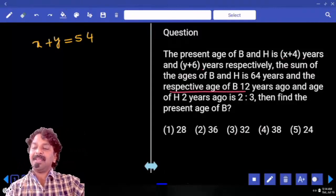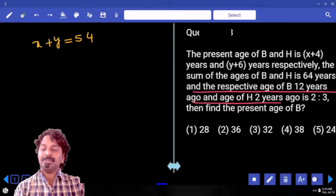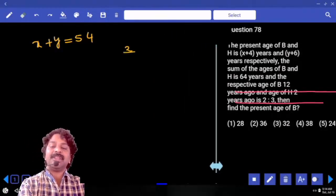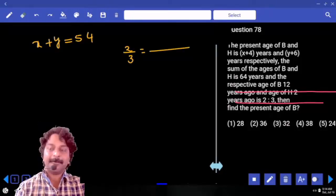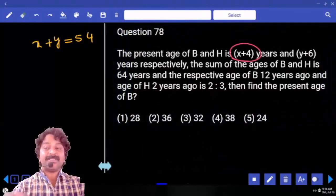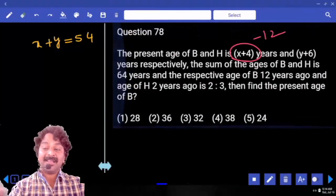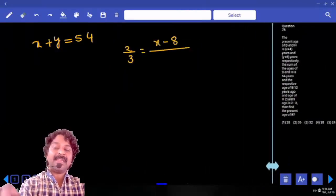The respective ages of B 12 years ago and age of H 2 years ago, 2 is to 3. 2 is to 3 is the ratio. I will write it as a ratio. What is B's present age? x plus 4. From that we have to subtract 12 years. Then it is x minus 8. x minus 8.